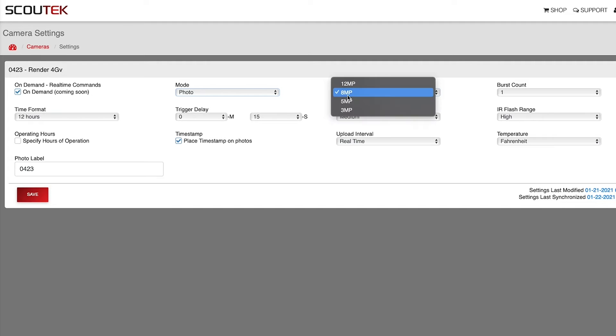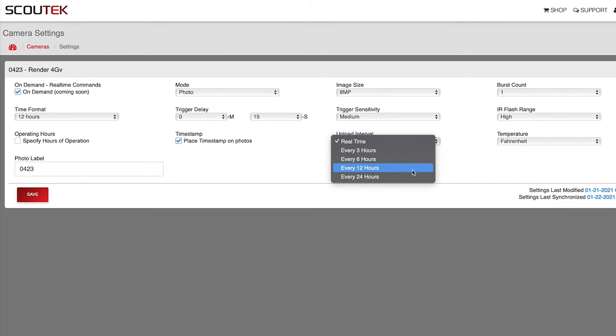The great thing with cell cameras is you can manage and control them remotely. If you want to change your camera settings, whether that's a trigger delay or you want to change modes, or you want to change your burst count.